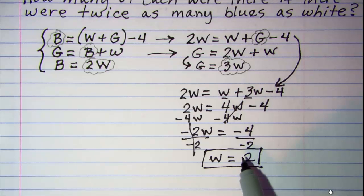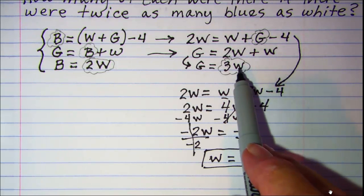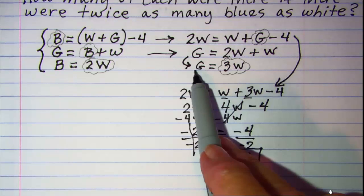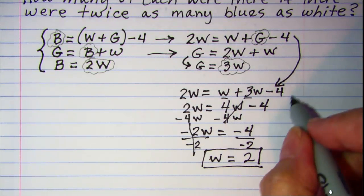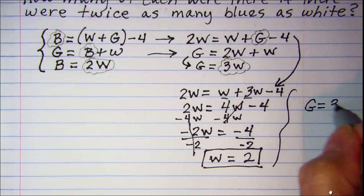Now I'm going to work backwards. In other words, I know my W value is 2. So I can come back up here and find my value for G. G is equal to 3W.